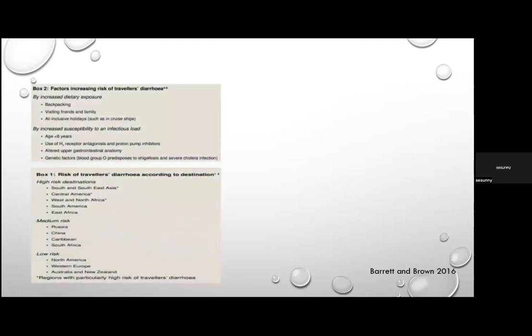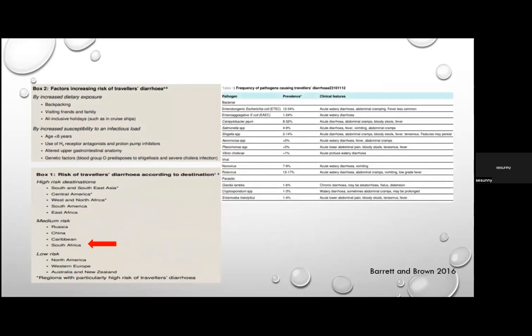High-risk destinations for traveller's diarrhoea are Asia, the Americas, and Africa; South Africa is considered a medium-risk destination. The most frequent pathogens are enterotoxigenic E. coli, followed by enteroaggregative E. coli, Campylobacter, and rotavirus.